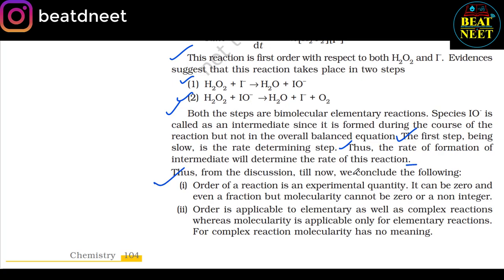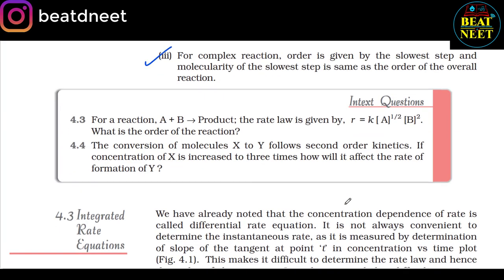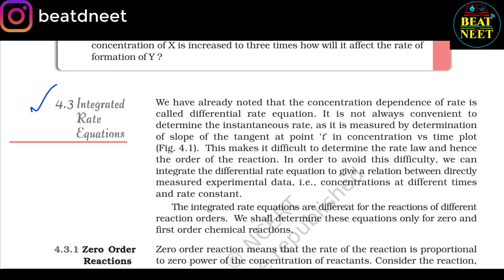From the discussion, we conclude: (1) Order of a reaction is an experimental quantity; it can be 0 or even a fraction, but molecularity cannot be 0 or a non-integer. (2) Order is applicable to elementary as well as complex reactions, whereas molecularity is applicable only to elementary reactions — for a complex reaction, molecularity has no meaning. (3) For a complex reaction, order is given by the slowest step, and the molecularity of the slowest step is the same as the order of the overall reaction. 4.3 Integrated Rate Equation.